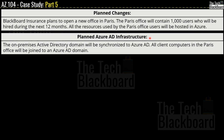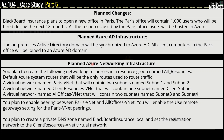For planned Azure AD infrastructure: the on-premises Active Directory domain will be synchronized to Azure AD, and all client computers in the Paris office will be joined to an Azure AD domain. For planned Azure networking infrastructure: you plan to create the following resources in a resource group called 'all resources'. Only default Azure system routes will be used. Resources include a virtual network named Paris-vNet with two subnets (Subnet 1 and Subnet 2), and a virtual network named ClientResources-vNet with one subnet named client subnet.